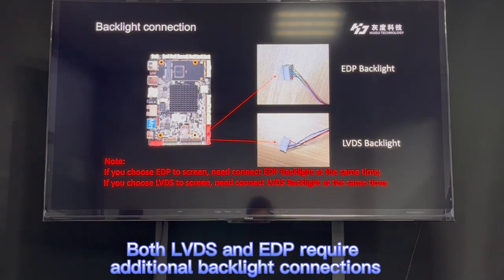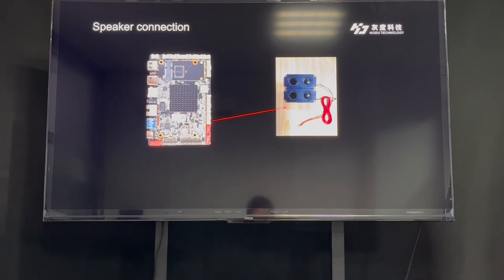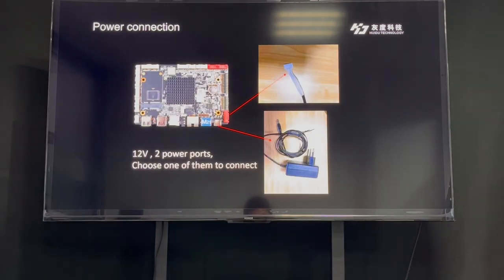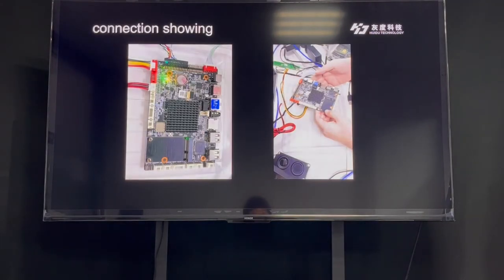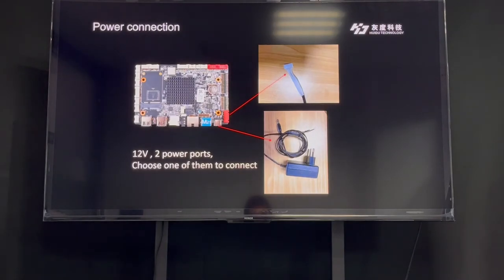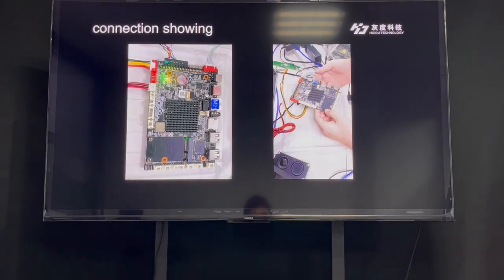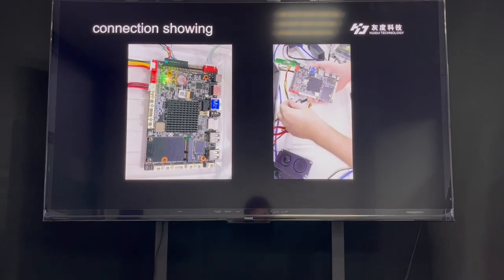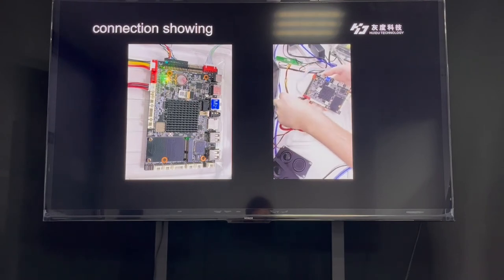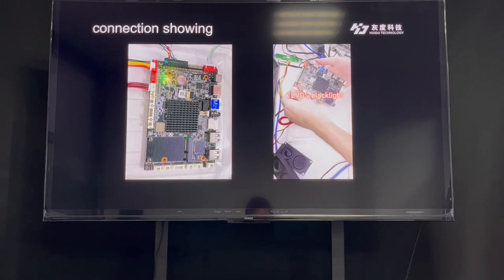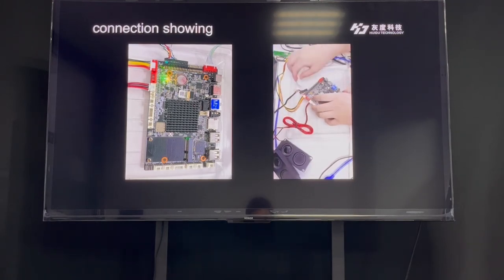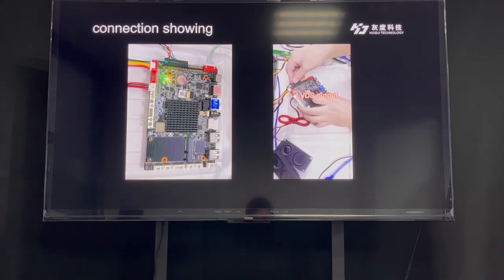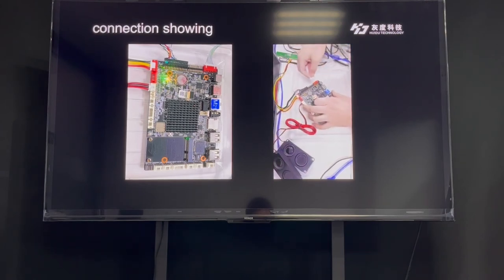This is the backlight interface. If your LCD screen uses EDP input, you need to connect the EDP backlight. If your LCD screen uses the LVDS interface, you need to connect the LVDS backlight. This port is for speaker connection, and there is also one port for power supply connection. This video will guide you how to connect the LVDS port and speaker — first the speaker, then the LVDS backlight, then the LVDS output to the LCD screen, and finally the power supply.